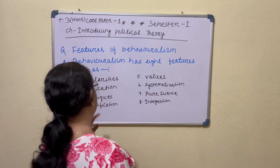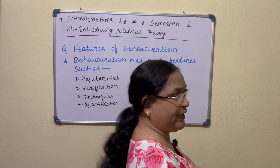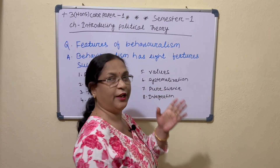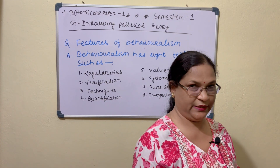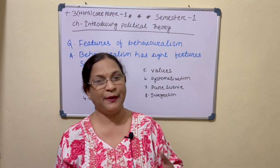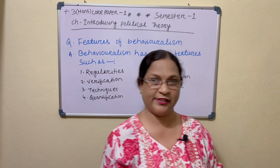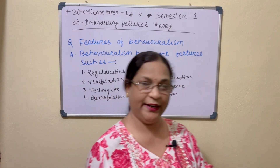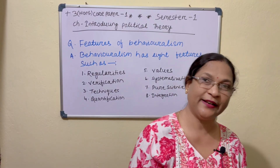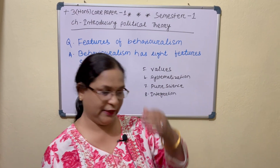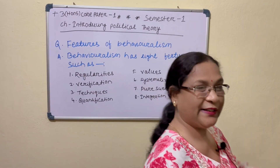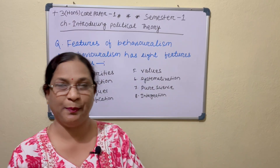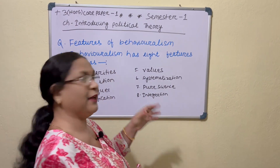Your fifth point is Values. According to the behavioralist, values need to be separated from the facts. Ethical evaluation is on one hand and empirical explanation is on another. Objective scientific inquiry has to be value-free and value-neutral.